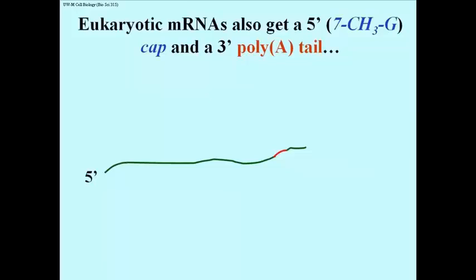In addition to splicing, eukaryotic mRNAs are further processed before they become mature mRNAs ready to be translated into polypeptides. They get a 5' cap and a 3' poly-A tail.